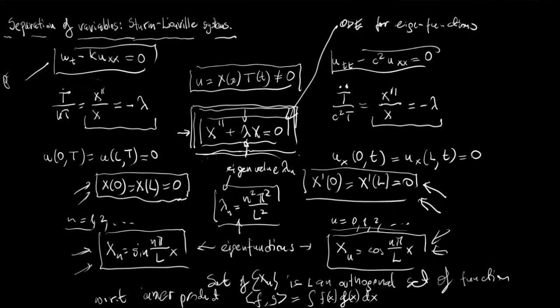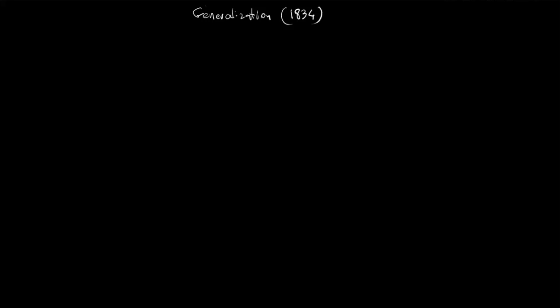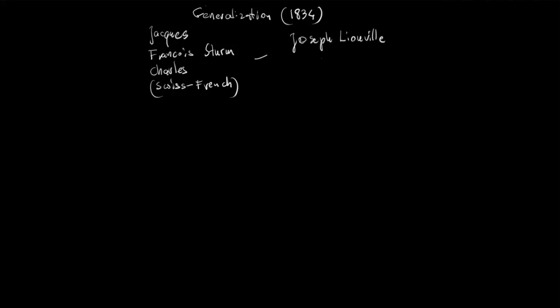That is what we did for the heat equation and the wave equation. Now we want to generalize this procedure for more general parabolic or hyperbolic PDEs. This generalization is due to two mathematicians from the 1800s — the result is from 1834. The first was French-Swiss mathematician Jacques-François-Charles Sturm, and the second was Joseph Liouville, who was French.